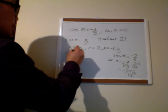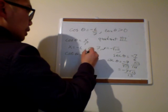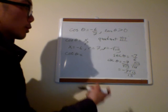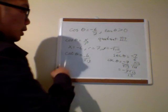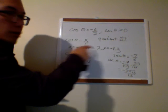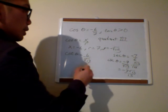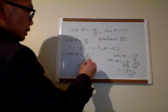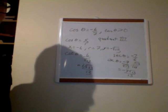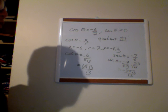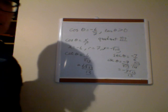The cotangent is flipping the tangent, so it's x over y. My tangent was root 13 over 6, so cotangent is 6 over root 13. Or from the original values, negative 6 over negative root 13 becomes positive 6 over root 13, and rationalizing gives 6 root 13 over 13. So that's how you find the five other trig functions given one trig function and knowing certain restrictions on them.